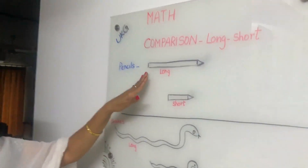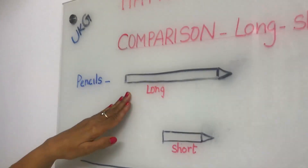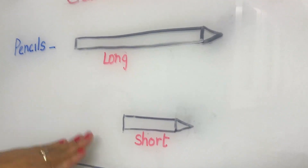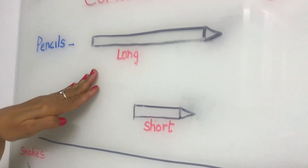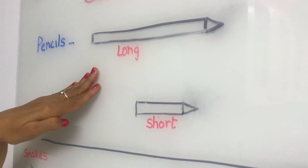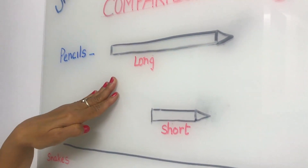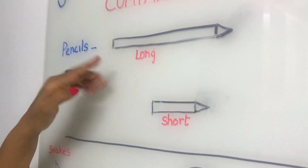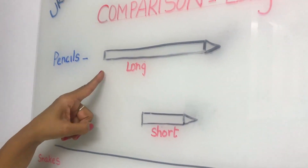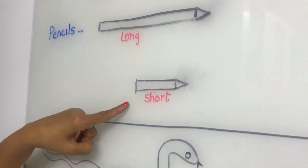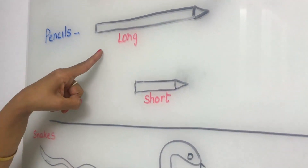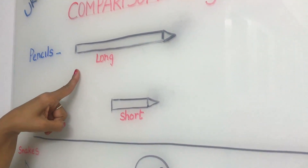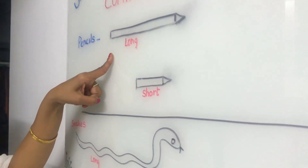Here there are two pencils — this is one pencil and this is another pencil. How can you say which one is long and which one is short? For any comparison we need two objects. Here two objects are there, so by distinguishing the two pencils by length, we can say which is longer and which is shorter.